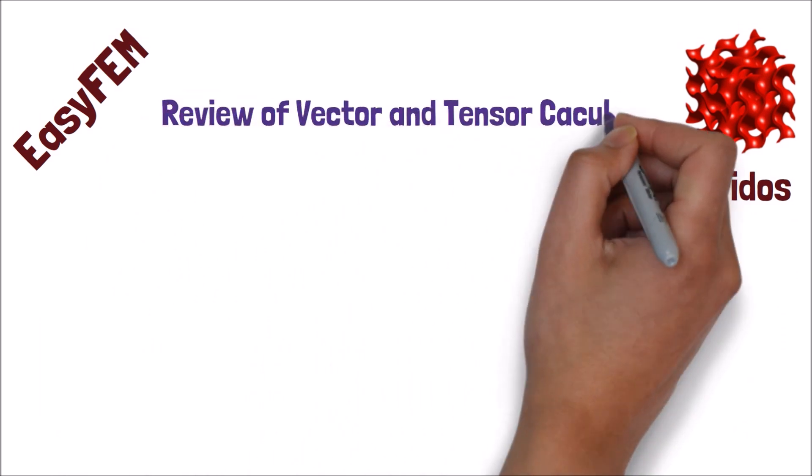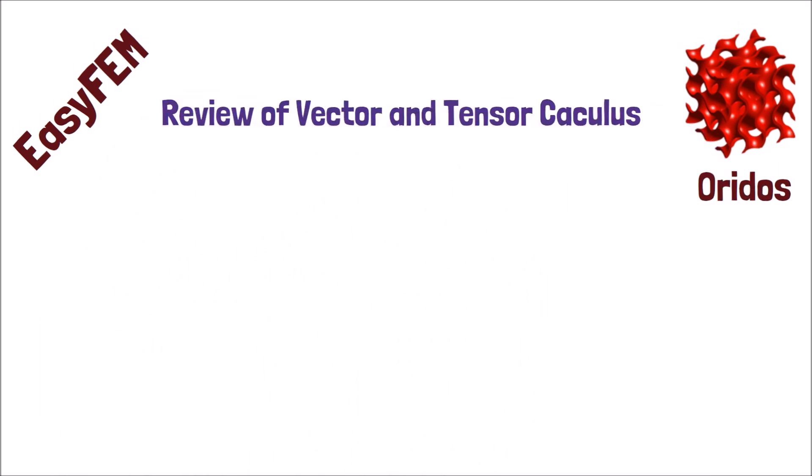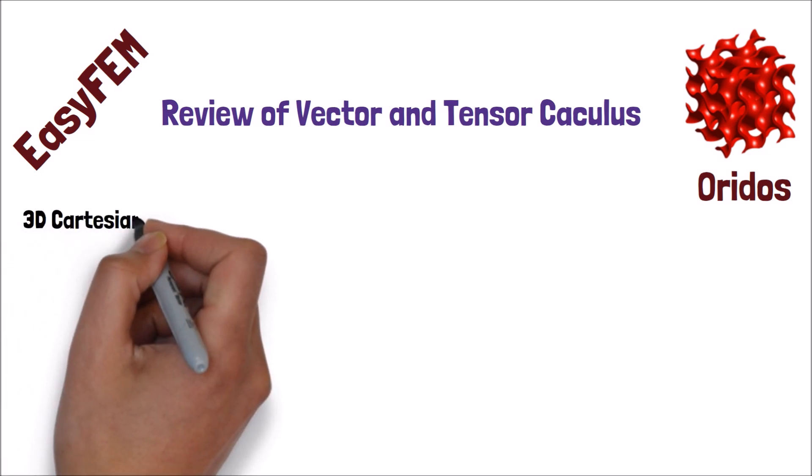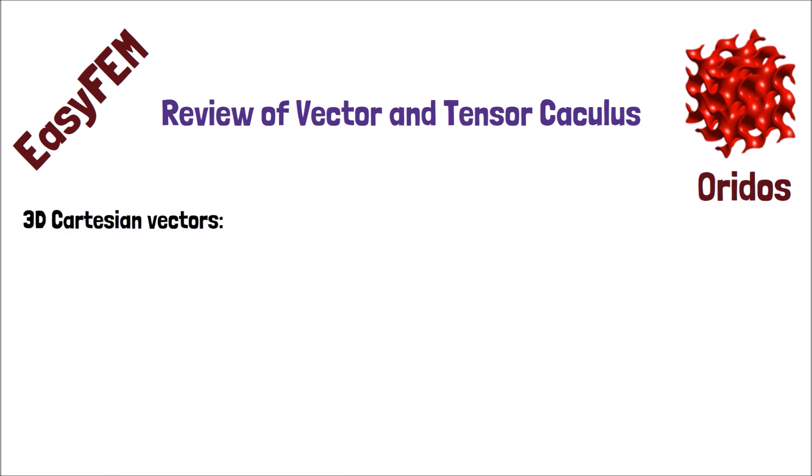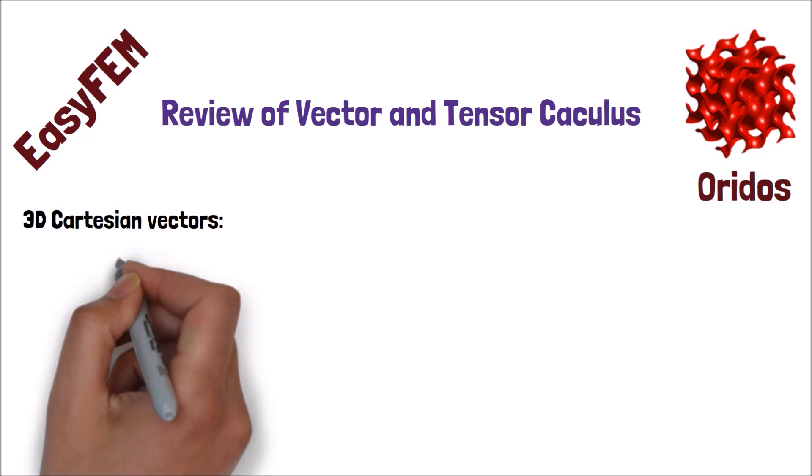Let's start with the vector. What is a vector? Vector is a finite collection of scalars. In this video, I will focus on the Cartesian vector, a Euclidean vector defined using Cartesian coordinates. For example, a 3D Cartesian vector U is defined as shown.